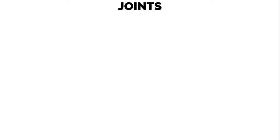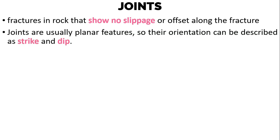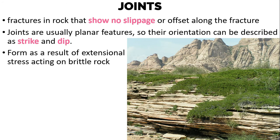As we have studied in our discussion of physical weathering, joints are fractures in rock that show no slippage or offset along the fracture. They are usually planar features, so their orientation can be described as strike and dip.